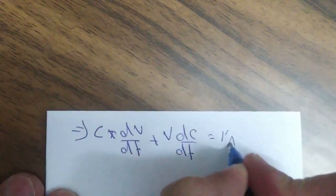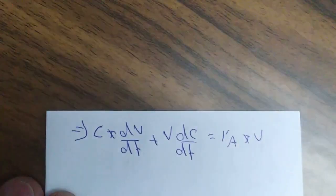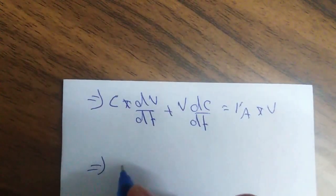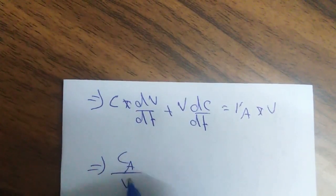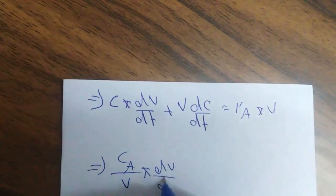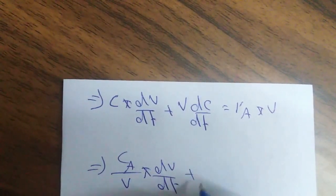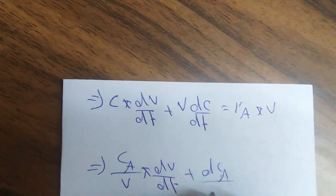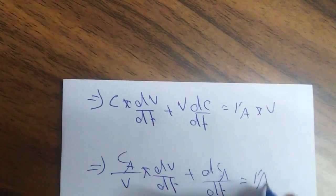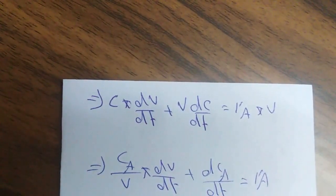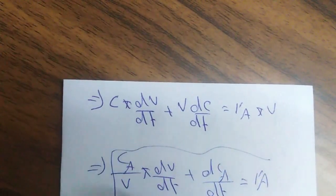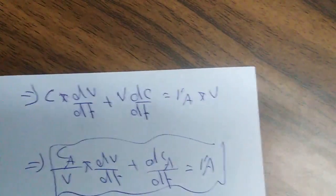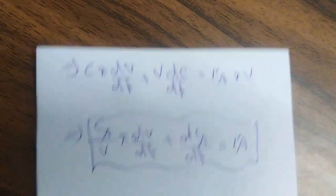وبقدر أقسم على الـ Volume فبتصير: (C_A/V) × dV/dT + dC_A/dT = r_A. هذه بالنسبة للـ Case الثاني لما يكون في عندي Pressure constant لكن الـ Volume بتغير.